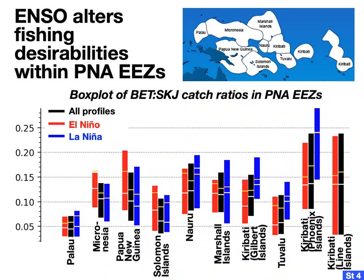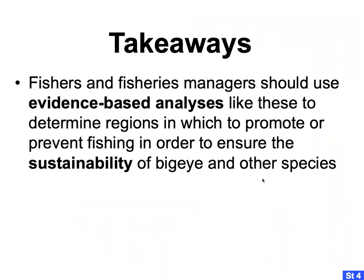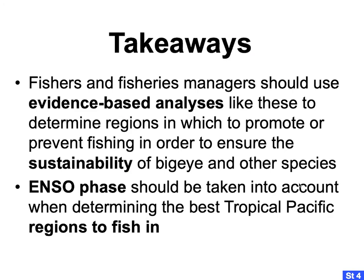Just as was the case for tuna hypoxic depths in story number one, we also see large variations in bigeye-to-skipjack catch ratios within those same PNA EEZs between different phases of ENSO. When choosing which EEZ to go fishing in, you should really consider which phase of ENSO you're in. Takeaways from this story: fisheries and managers should use evidence-based analyses to determine regions in which to promote or prevent fishing to ensure the sustainability of bigeye and other species — not just make a choice and stick with it the same every year. The ENSO phase should be taken into account when determining the best tropical Pacific regions to fish in.